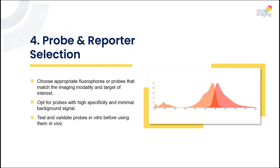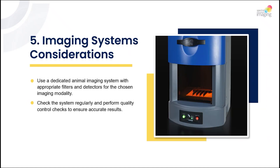Number four: probe and reporter selection. Choose appropriate fluorophores or probes that match the imaging modality and target of interest. Opt for probes with high specificity and minimal background signal. Test and validate probes in vitro before using them in vivo.